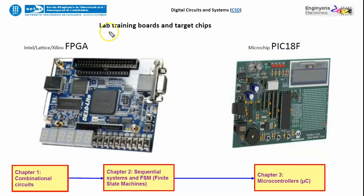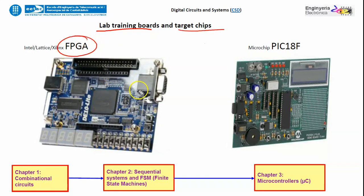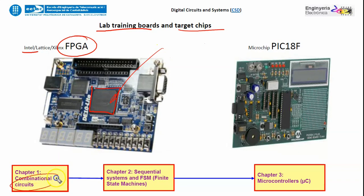Regarding laboratory training boards and target chips, we will focus on FPGAs. For example, we will use an Intel board where the FPGA at the center of the board will be programmed with a corresponding configuration file, so this board will behave like a combinational circuit or as a sequential system.